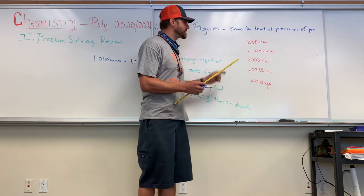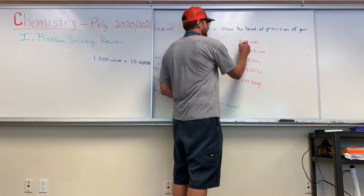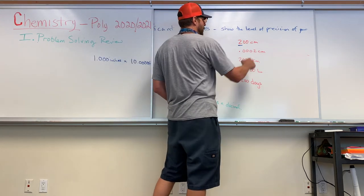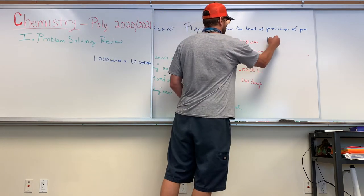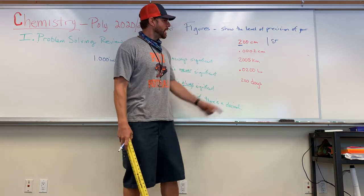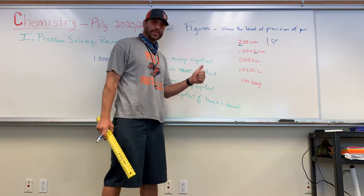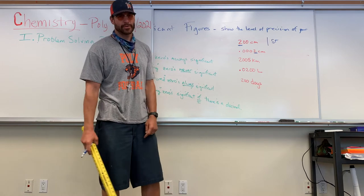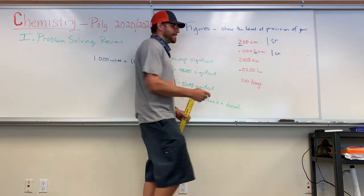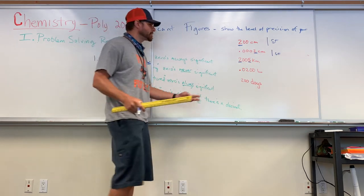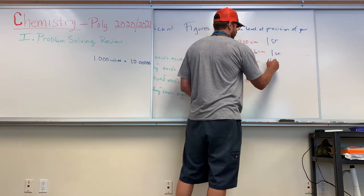Let's look at some examples. 200 centimeters — how many significant figures? The two is a non-zero, always significant. The two zeros are trailing with no decimal present, so not significant. That's one significant figure. How about 0.002? The two is significant; the three zeros are leading zeros, only there as placeholders — not significant. Also one significant figure. How about 2005? Two and five are non-zeros, always significant. The two middle zeros are captured — always significant. That's four significant figures.